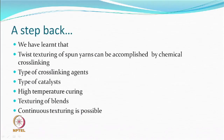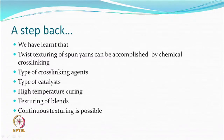In the last lecture we learned that twist texturing of spun yarns can be accomplished by chemical cross-linking, which means you have a cross-linking agent and then you do some chemical reactions under certain temperature and time conditions. This also means you have a specific type of bifunctional cross-linking agent and you need some catalyst so that the reaction can take place at a reasonable temperature without degradation of the fibre.